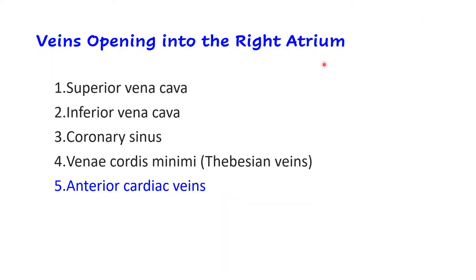In total, five veins open into the right atrium: superior vena cava, inferior vena cava, coronary sinus (which drains the heart itself), vena cordis minimi (thebesian veins, present in each chamber draining venous blood into that chamber), and anterior cardiac veins — coming from the right ventricle, crossing the atrioventricular sulcus, and draining mainly into the rough part of the right atrium. The smooth part therefore receives all four except the anterior cardiac veins.